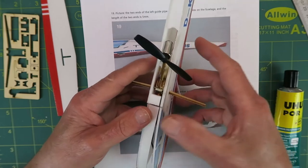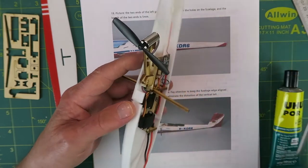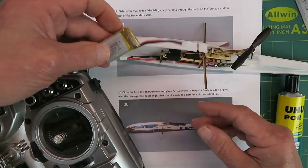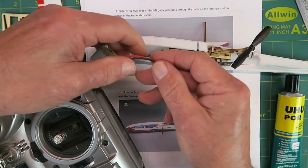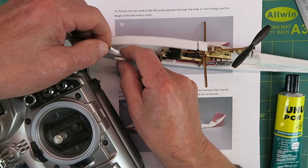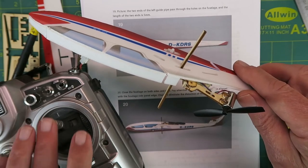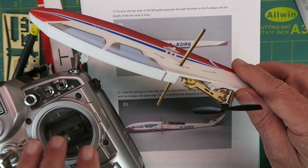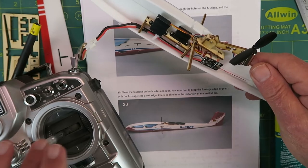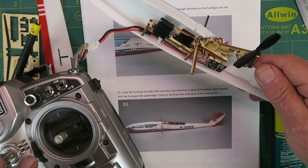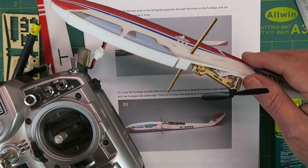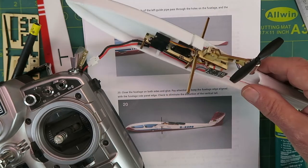Before I glue that on though, a final check that everything is working correctly. This is the type of battery I am intending to use—hopefully it will balance correctly. We can see the servo there for the elevator and the servo here for the rudder function. All of that is working okay and they're well centered. Final check on the throttle.